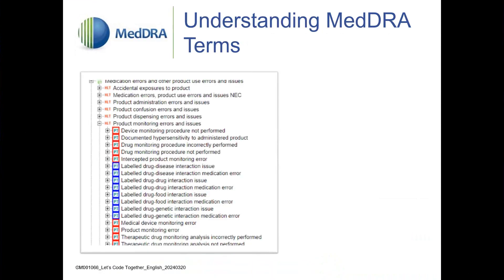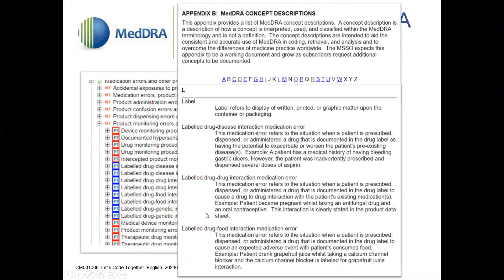There are quite a few MedRA terms representing specific types of labeled drug interaction medication errors under the HLT product monitoring errors and issues in the system organ class injury, poisoning, and procedural complications. If you are unsure of the meaning of these PTs, refer to the MedRA concept descriptions, which you can access via the MedRA browser.